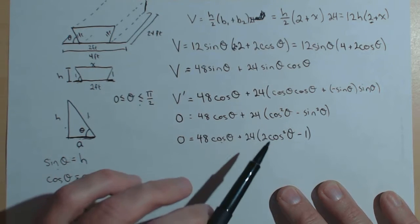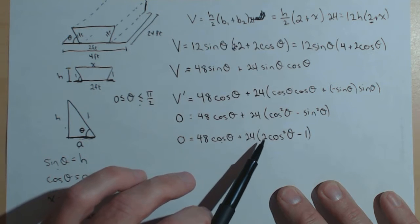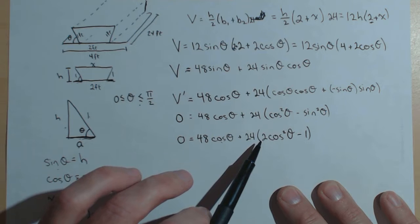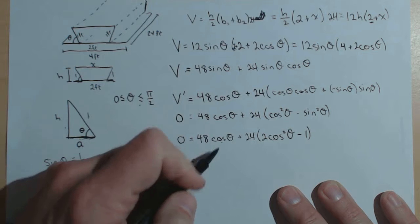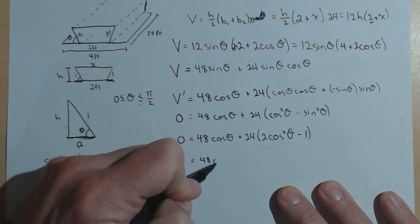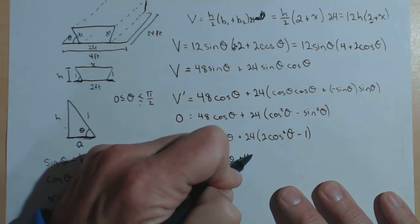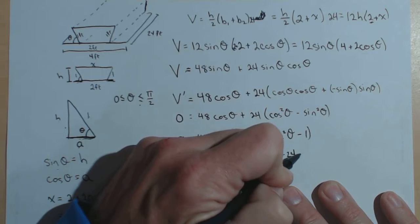Well, I'm going to use the identity, 2 cosine squared theta minus 1. All right. There's a couple other double angle identities for cosine of 2 theta. This is the one that I think will work best for us. Because, now we just have a quadratic. So, I've got 48 cosine of theta plus 48 cosine squared theta minus 24.